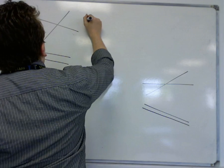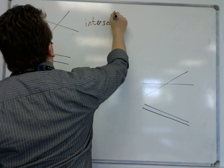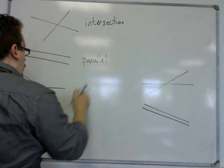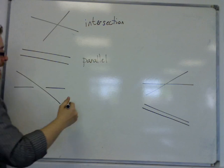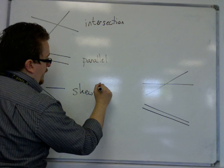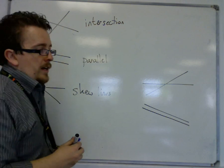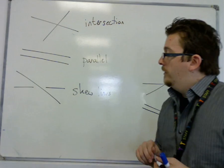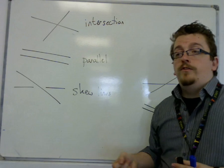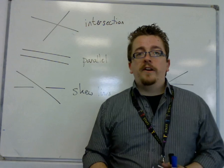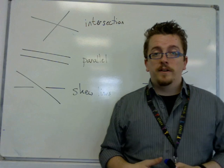We can have intersection, they could be parallel, or we could have this situation, and these are called skew lines. Lines that don't have the same direction but don't intersect. And they are known as skew lines. We are going to look at these three different situations in turn.